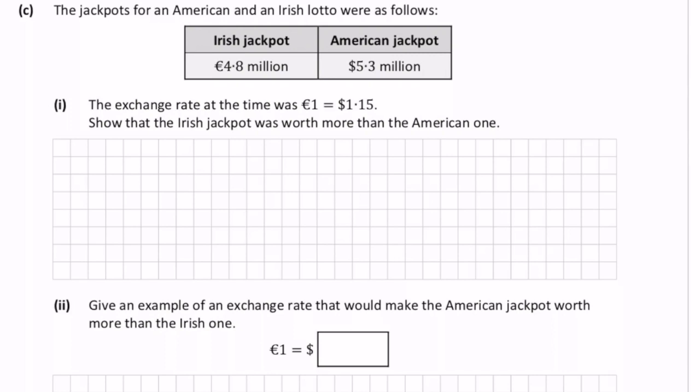The exchange rate at the time was 1 euro is to 1 dollar 15 cents. Show that the Irish jackpot was worth more than the American one.